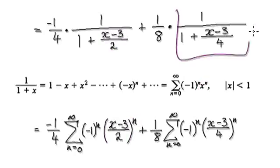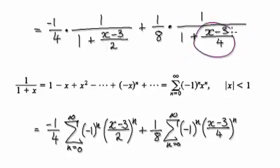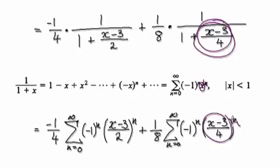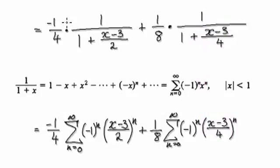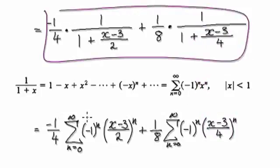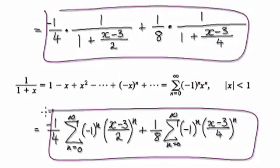And the same goes over here as well. This is your bubble here to the power of n. So from here, that would then take us to here.